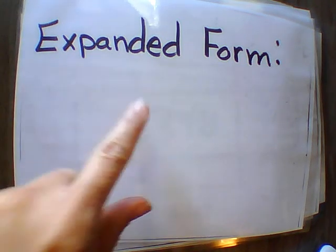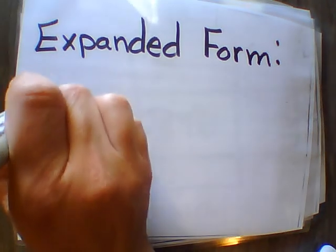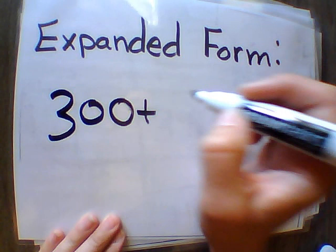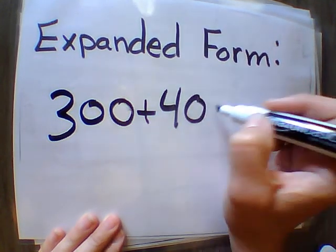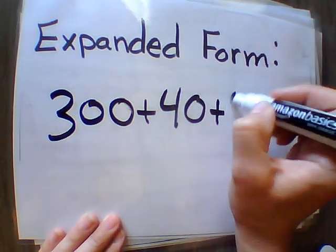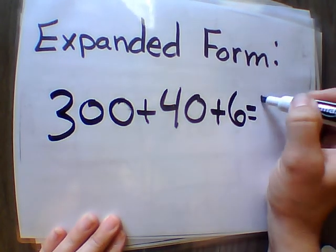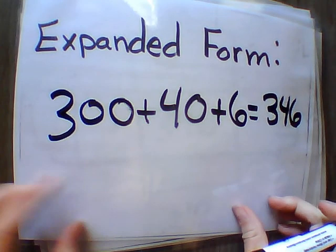All right, with the expanded form, we will have the 300. We have four tens, which is the same as 40, plus our six ones. So 300 plus 40 plus six equals 346.